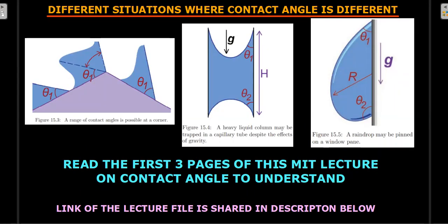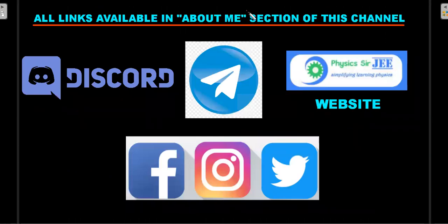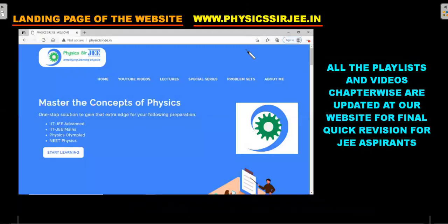So keeping that spirit in mind, I would like to give you a practice problem. So before I move on to present you the practice problem, these are the different places where you can connect with this channel: Discord, Telegram, website, and all the social media, whichever you want. You can pick all the links of these in the About Me section of this channel. So please go there and utilize whatever you want. And there is a website physicssirjee.in. All the playlists and videos of this channel are arranged in a chapter-wise manner. So for quick revision of these things for JEE aspirants, it would be really helpful. How to use my website, I've already made a tutorial video. Please go through that. The tutorial video is in the description below or in the i-button above. Help yourself.